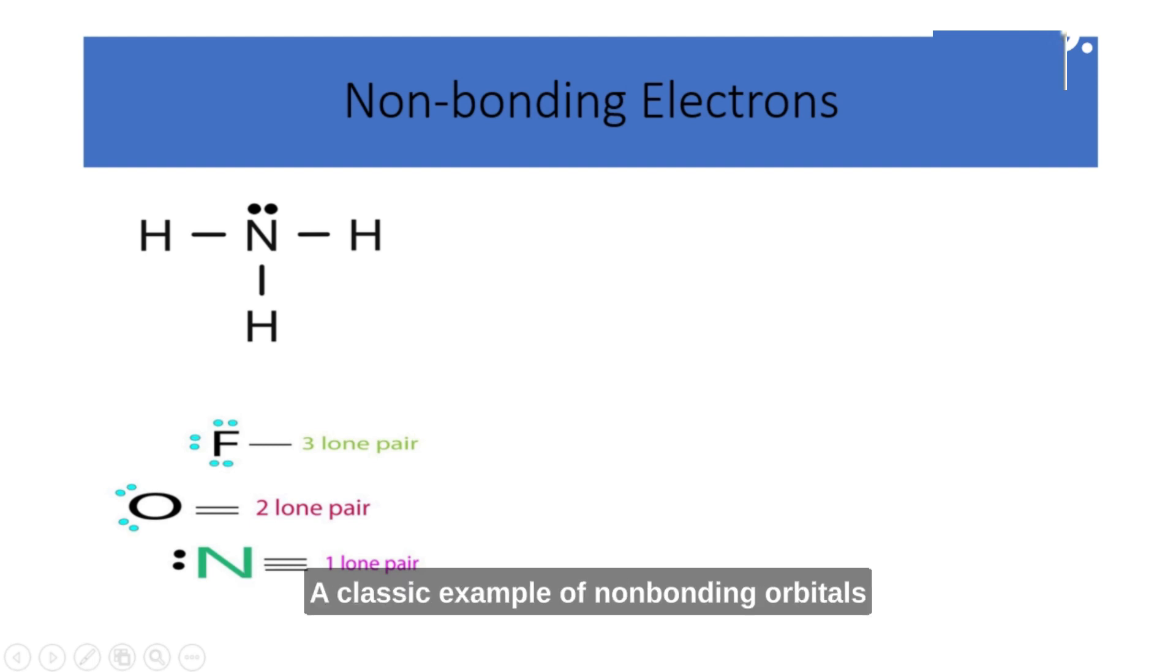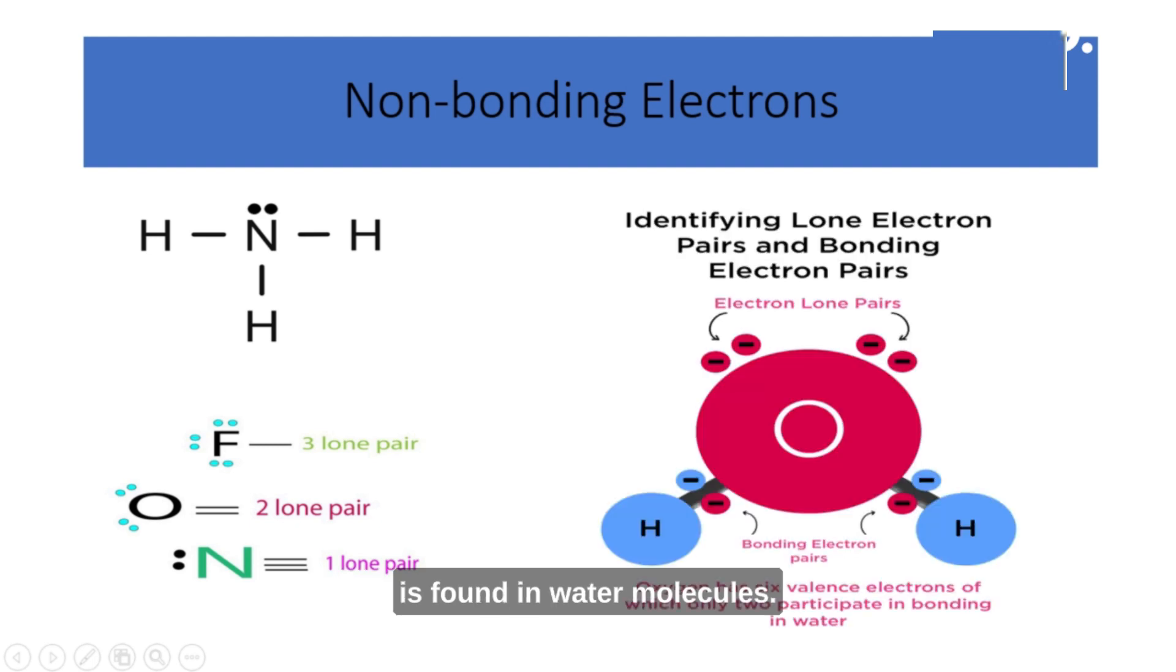A classic example of non-bonding orbitals is found in water molecules. Oxygen has six valence electrons, forming two covalent bonds with two hydrogen atoms. The remaining two electrons on oxygen are in non-bonding orbitals. These non-bonding electron pairs give water its bent molecular shape, making it a polar molecule.